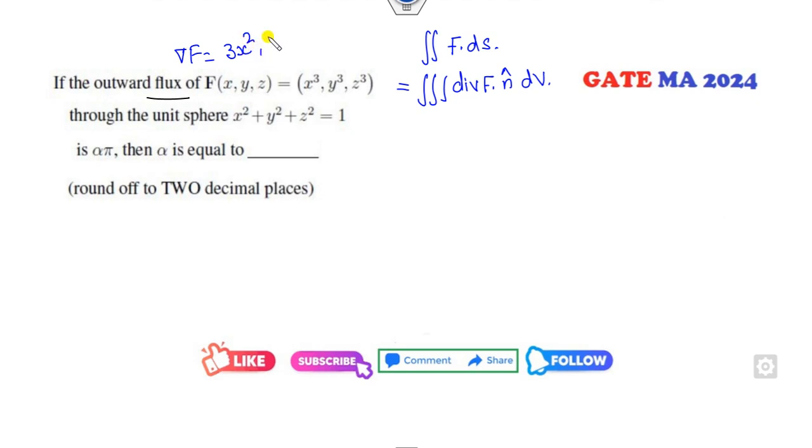So I can add them, so it will be 3x² + y² + z². So x² + y² + z² over the volume. Now, how can you integrate them? Either you can take the limits, otherwise change into the spherical polar coordinates.